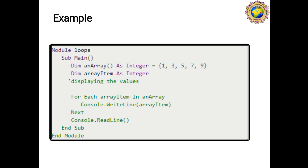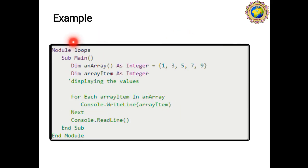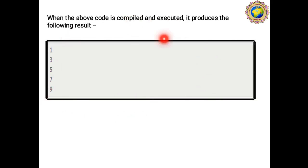To use the For Each Next loop in VB.NET, first define a Sub Main function, then declare an array with its values, then declare a variable, and bind that variable with Console.WriteLine. Then write Next, Console.WriteLine, End Sub, and End Module. The output of this program, when compiled and executed, produces the following result: 1, 3, 5, 7, and 9.